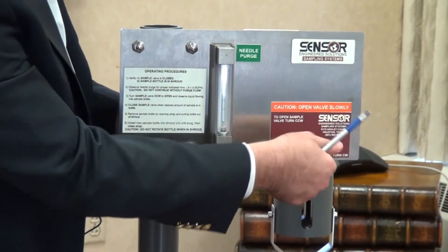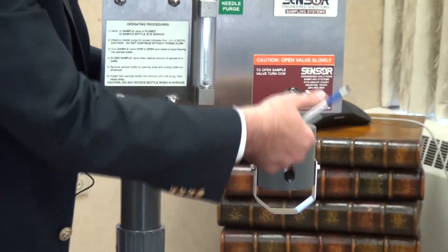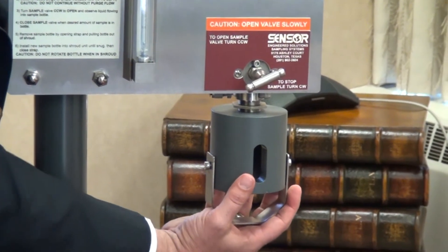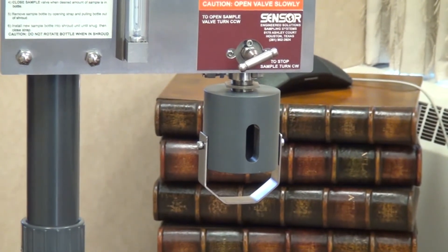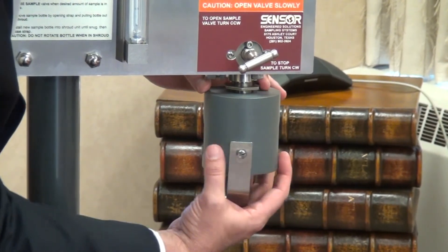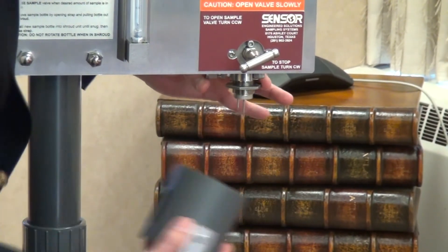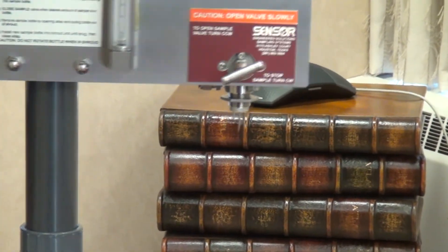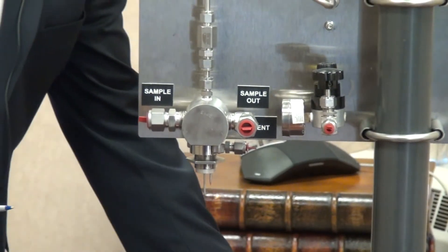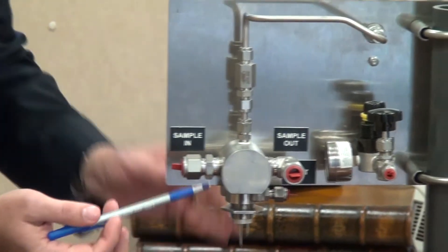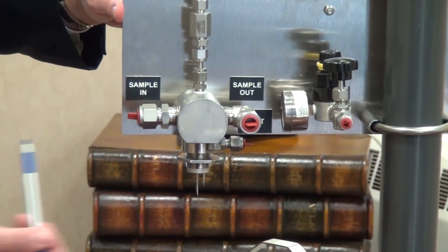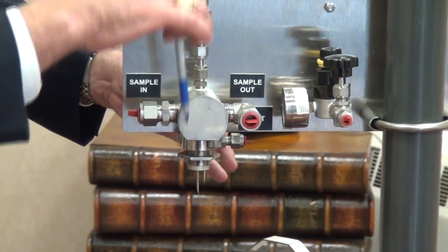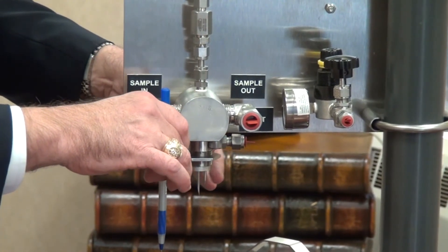So here is the sample valve for the operator—single-handle operation. This piece is called the shroud, and that's what contains the bottle during the sampling operation. If I remove the shroud, here's my process needle and my vent needle. Turn this around so you can see it from the back. Behind the panel, here's that sampling valve. So again, sample in, sample out, continuous flow through. When you open the valve, then you're passing down through the process needle into the bottle.